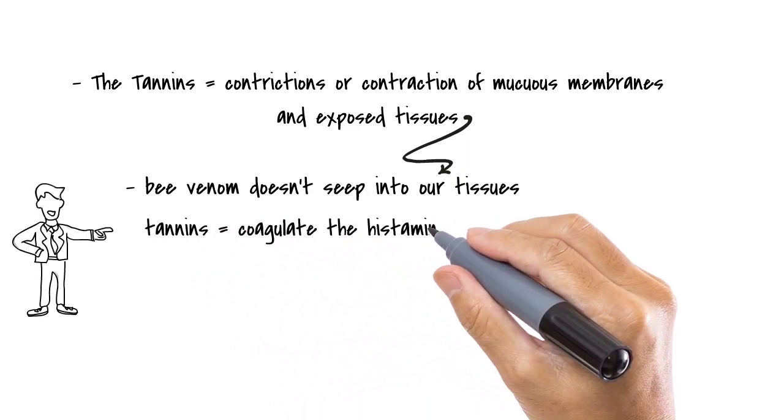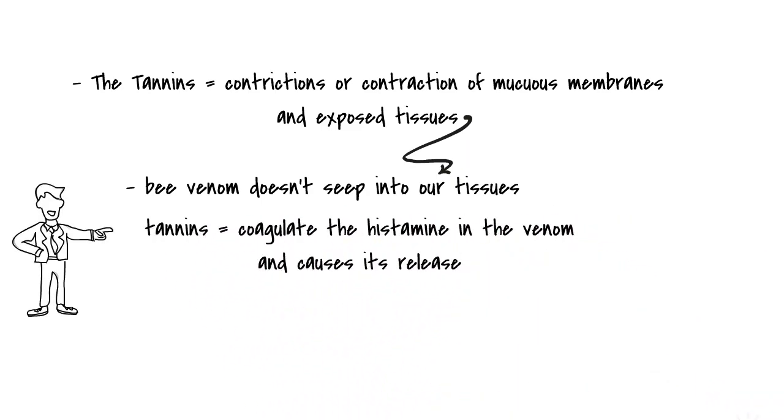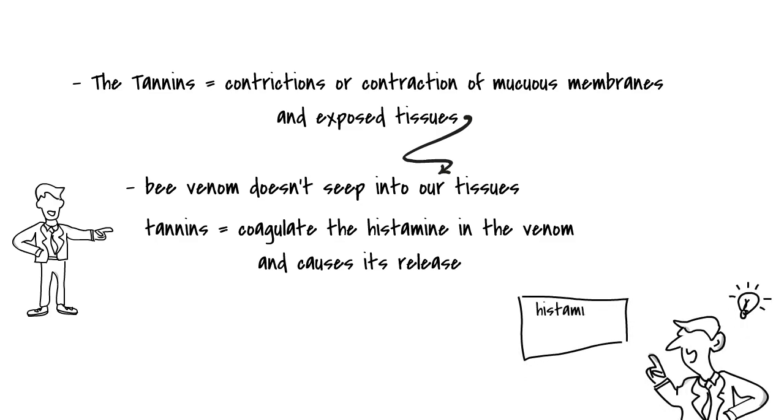Tannins also help coagulate the histamine in the bee venom and cause its subsequent release. This prevents the itch because histamine causes itching.